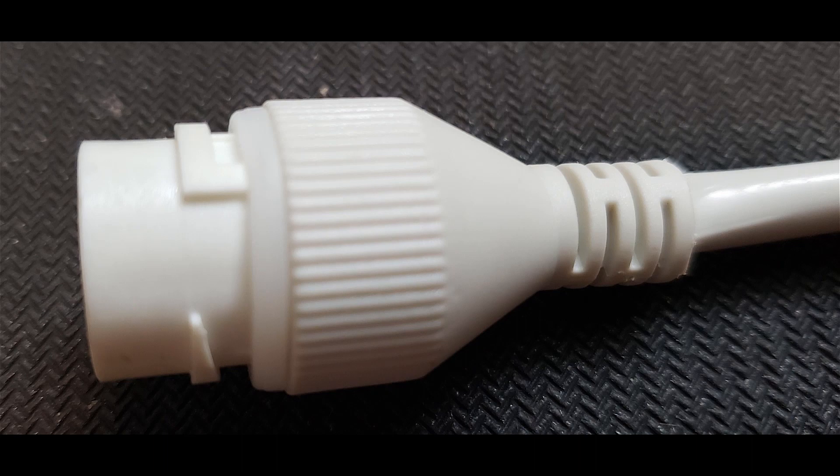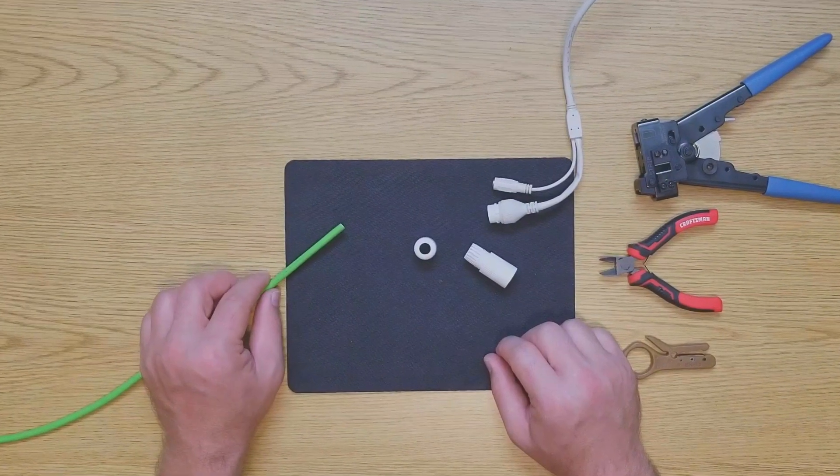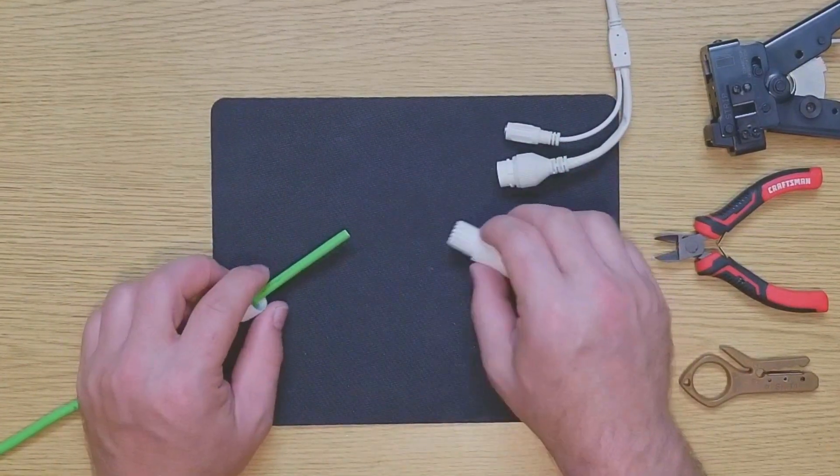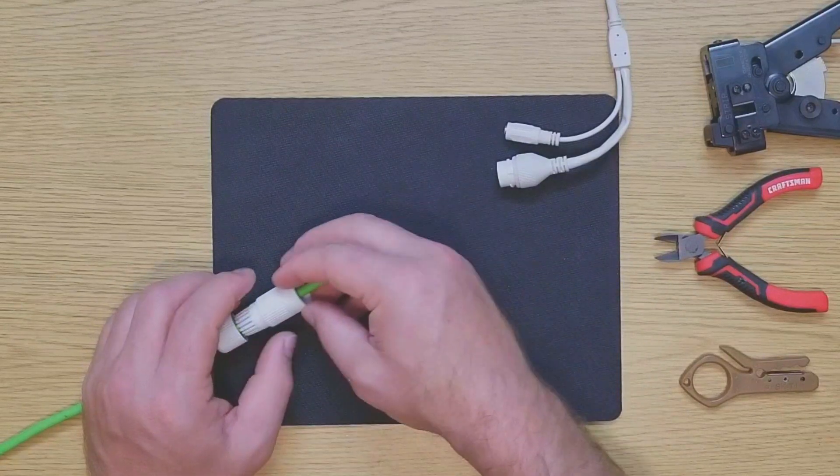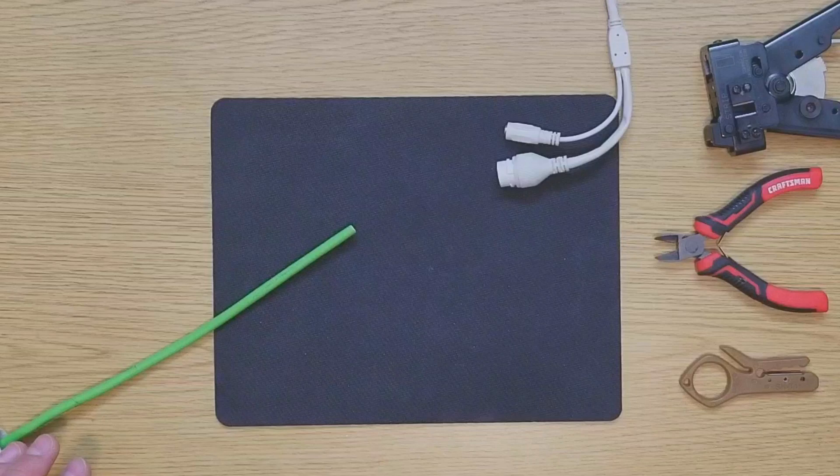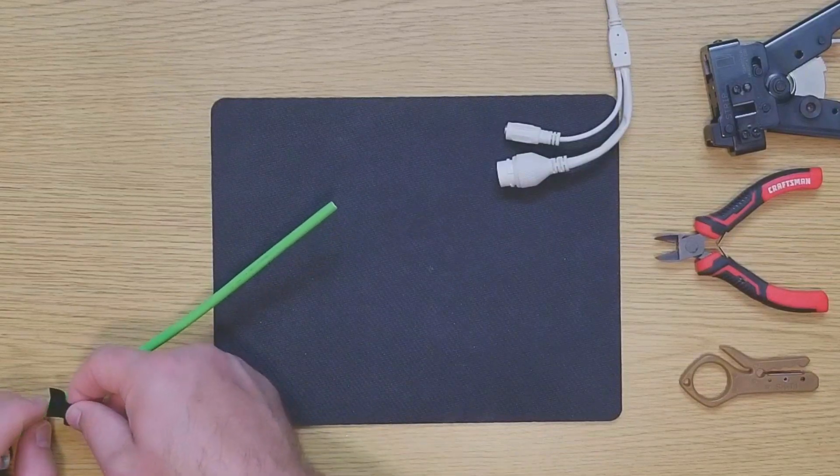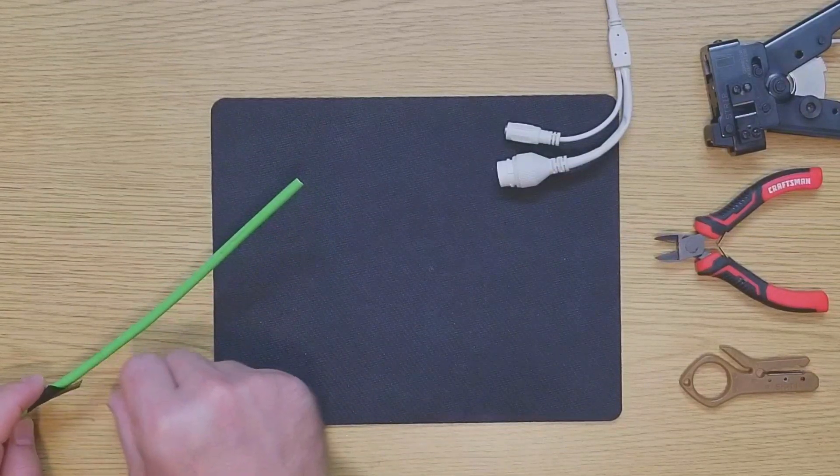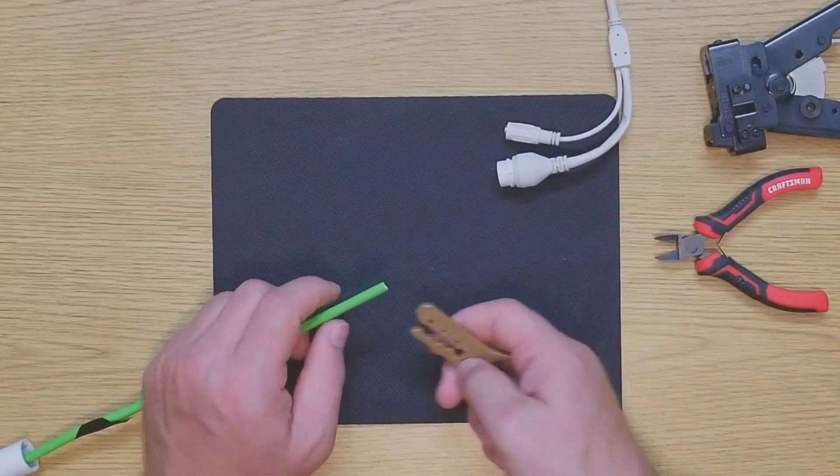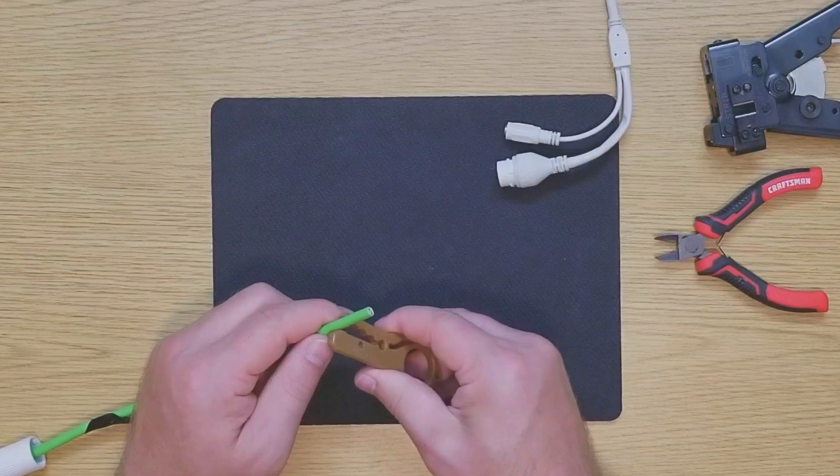Now before you get started on preparing your cable, I recommend that you go ahead and install these parts on first, starting with the screw cap, then the body with the grommet already installed. Slide them up your cable. If you're working on a ladder, you might want to stick a piece of electrical tape on there just so that these items don't slide off while you're preparing the cable end.